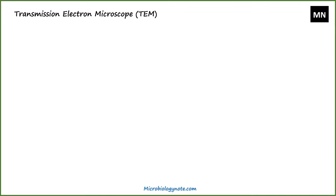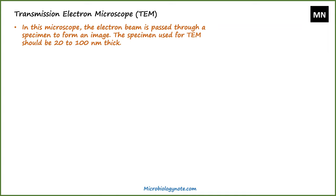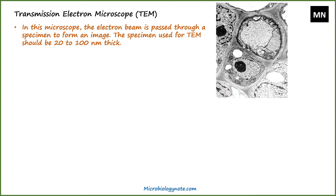The next electron microscope is the transmission electron microscope. In this microscope, the electron beam is passed through a specimen to form an image. The specimen used for TEM should be 20 to 100 nanometers thick. This type of microscope is used to study the internal structure of a specimen.